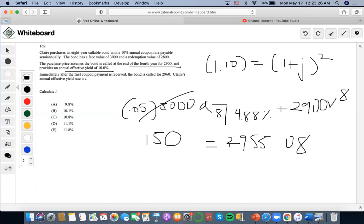So now, the actual purchase price of the bond would be $2,955.08. Based upon how much this bond is worth, it says immediately after the first coupon is received, the bond is called for $2,960. So that would mean that we'd have to set this purchase price of this bond in alignment with what they're saying about the first coupon payment. So there's only one coupon payment, and the bond is called for $2,960.